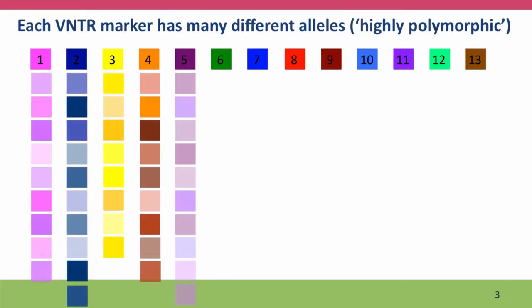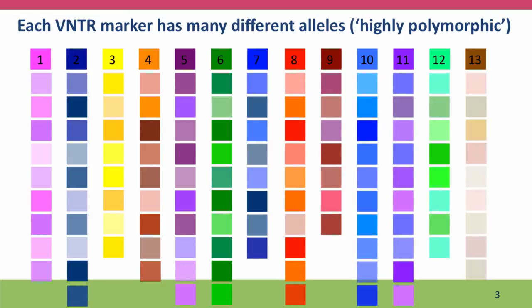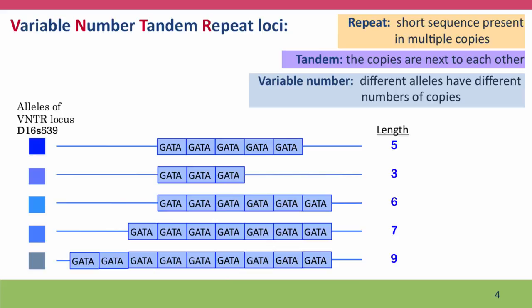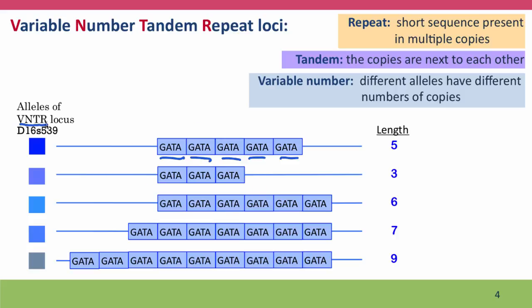As we said, each VNTR marker — each place in the genome that's a VNTR marker — has many different alleles. They're highly polymorphic. And this situation exists because of the nature of VNTR loci. VNTR stands for Variable Number Tandem Repeat loci. Loci are places on the genome. We'll unpack this backwards. They're repeats — short sequences present in multiple copies. As you see here, we've got 1, 2, 3, 4, 5 copies of the sequence G-A-T-A for this particular VNTR locus.